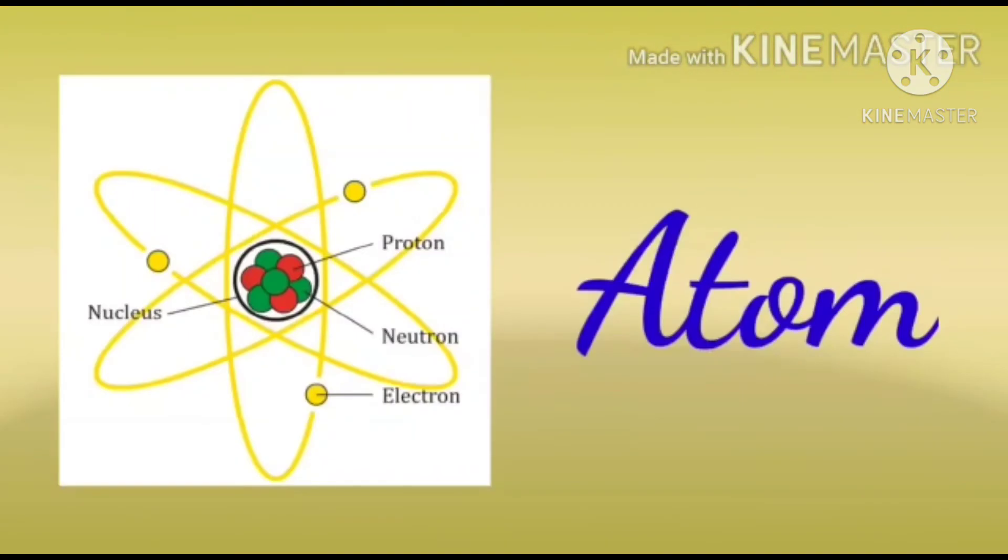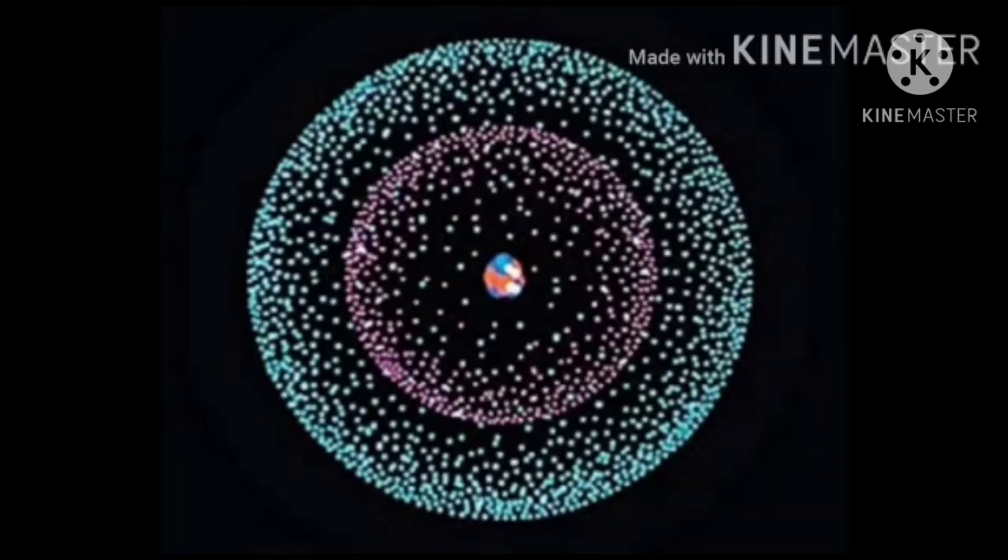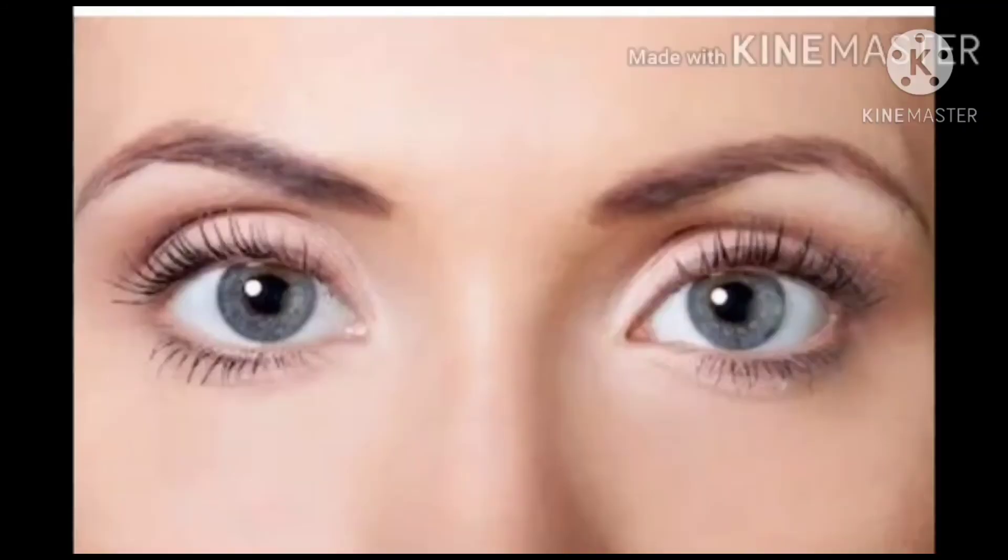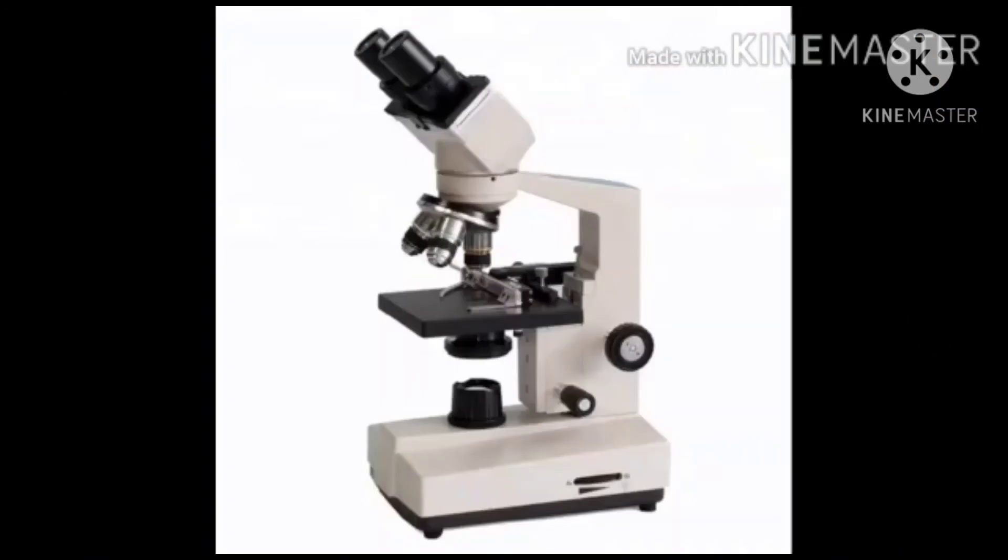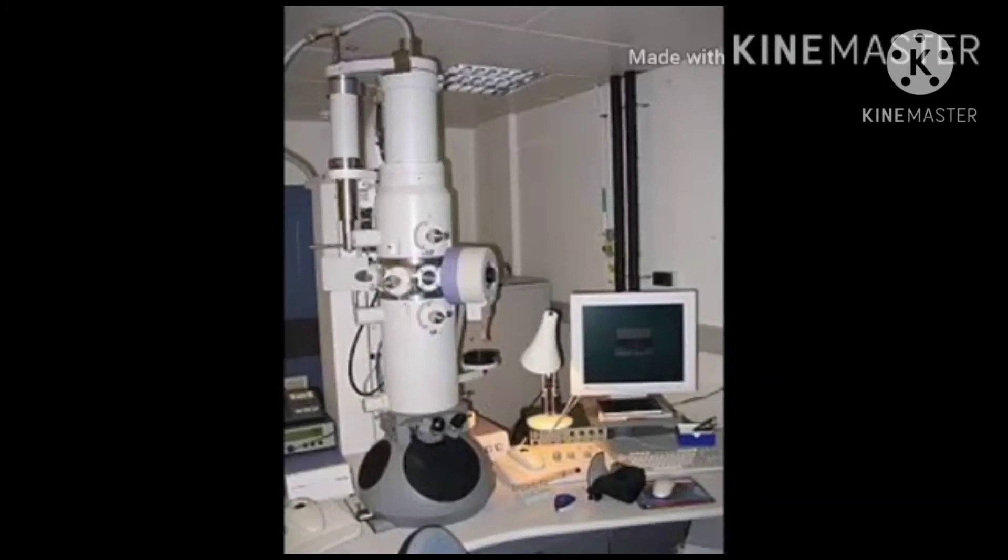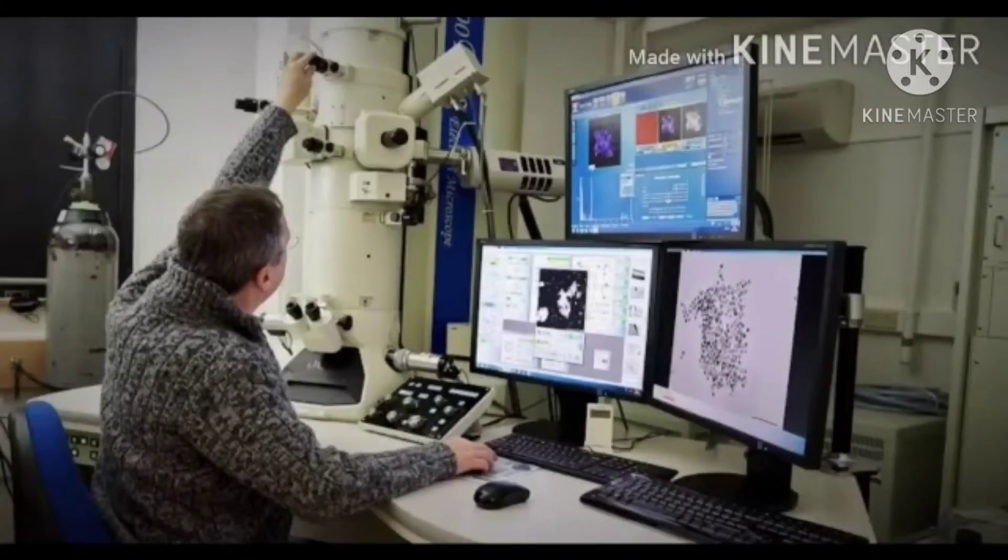Let us learn some important facts about an atom. An atom is a very small particle. We cannot see it with our naked eyes or under an ordinary microscope. It can only be seen with the help of a very powerful microscope. Atoms generally do not exist independently and they cannot be further divided.